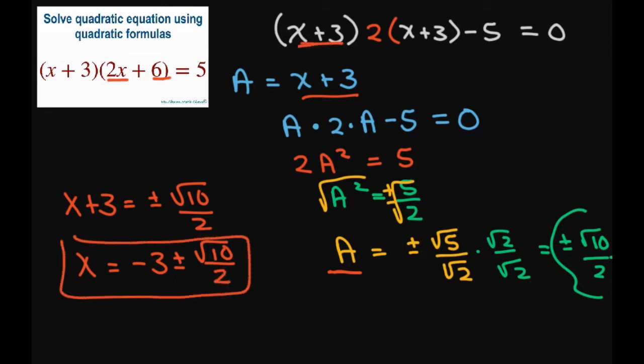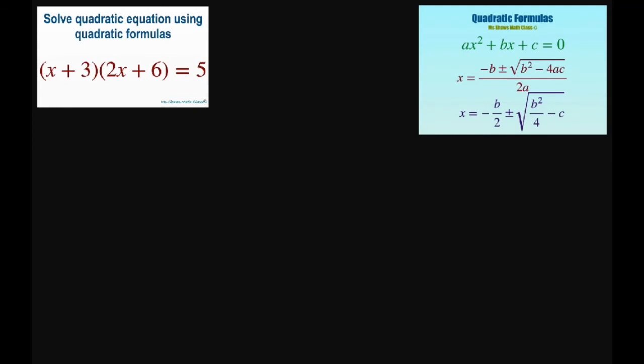So there's one method when you have these two binomials are the same. Alright, now let's do the quadratic formula. For the quadratic formula, you just FOIL this out, and this would give you, let's see...